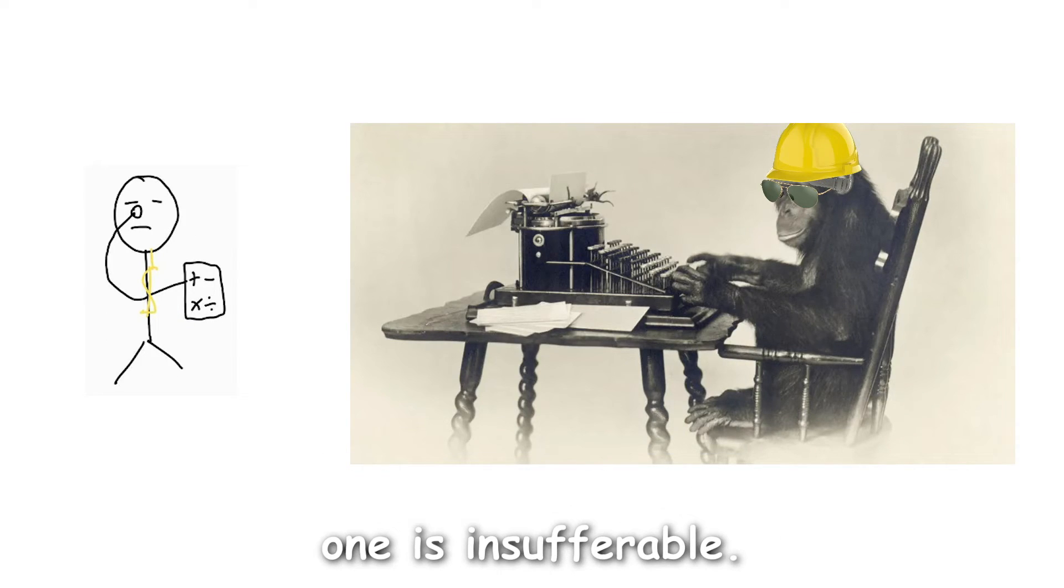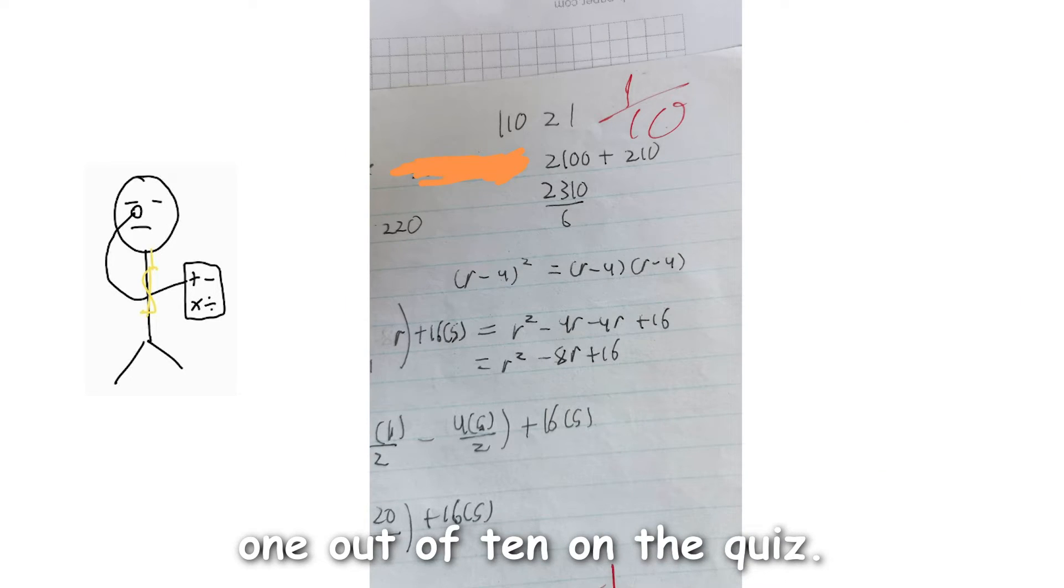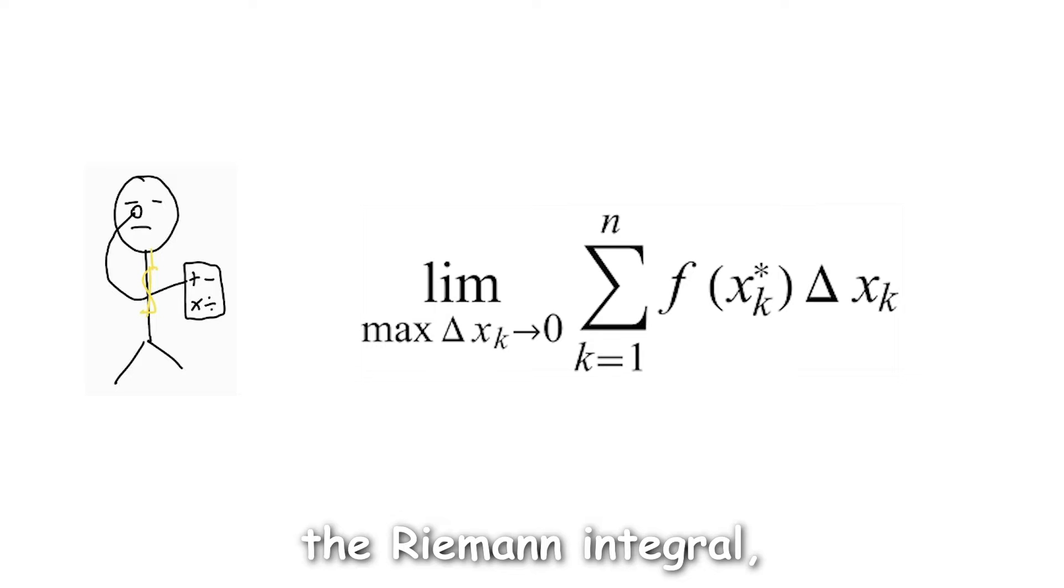But integration in calc 1 is insufferable. First, we must learn to approximate the area before we can find the actual area. Riemann sums. This process is slow and painful. Also, somehow they quizzed us on Riemann sums in our tutorial before they taught it in lecture, so I got an astounding 1 out of 10 on the quiz. Then comes the Riemann integral, which is an integral with a million extra steps, and you are sure to mess up one small step and get the wrong sum.